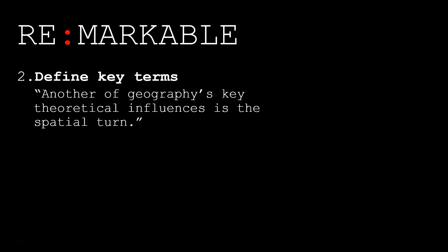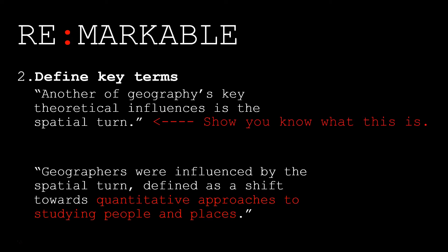In this example, the writer has not defined their key terms. We can see the term 'spatial turn,' which is a specific part of geography's academic development. The author probably thinks they've done a really good job, but they haven't actually explained what the spatial turn is. I can't give marks for knowledge and understanding if you don't demonstrate that you know what it is. So the author could improve the sentence by adding specificity about that term — here I've just added it at the end of the sentence — so the marker can then award marks for knowledge and understanding.